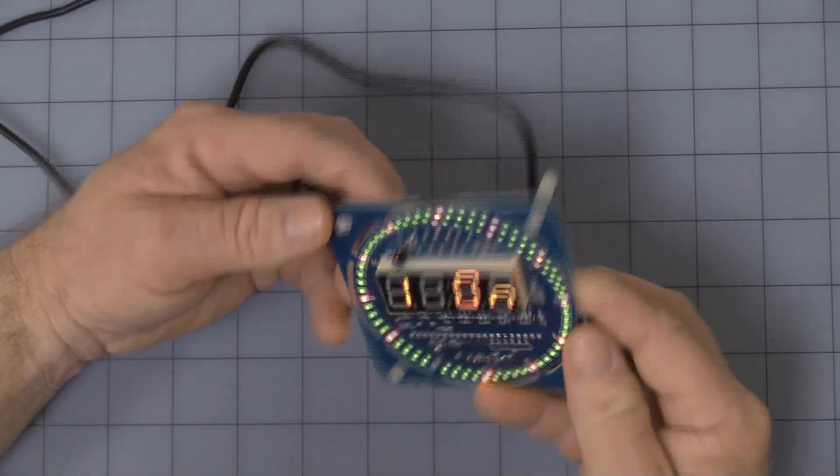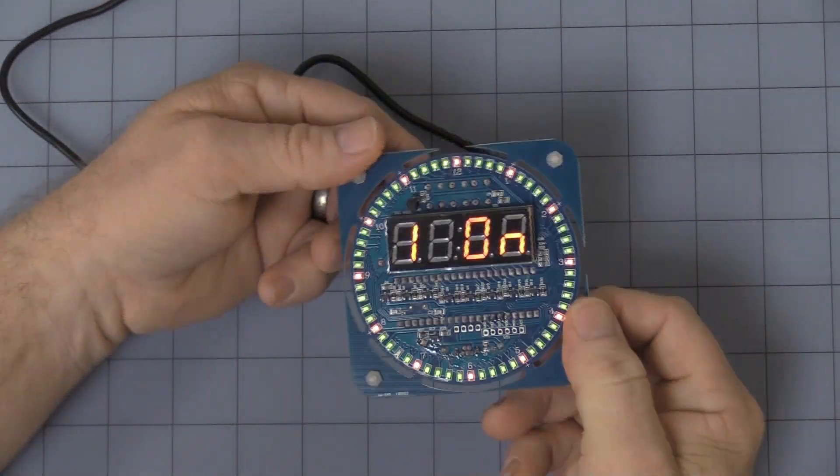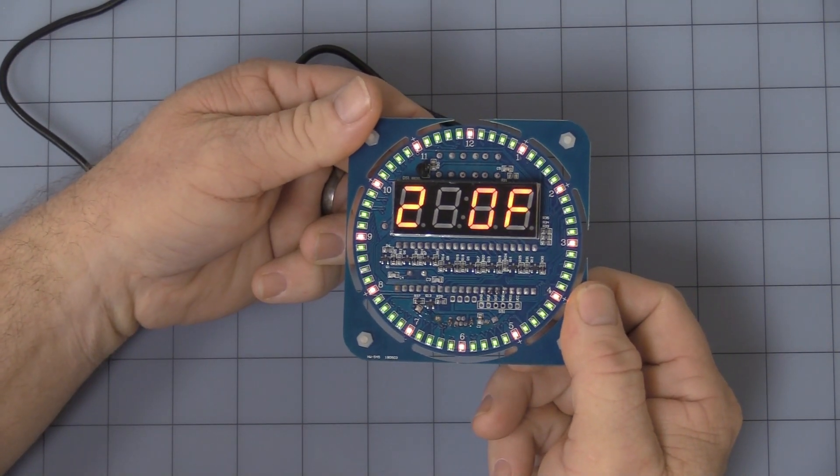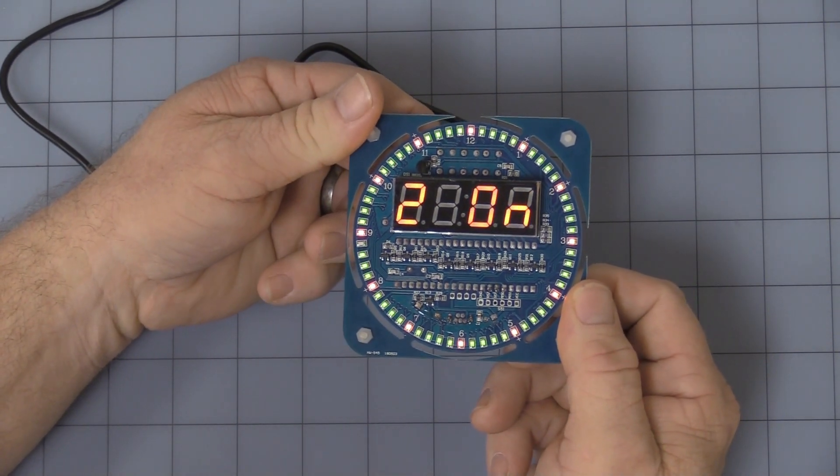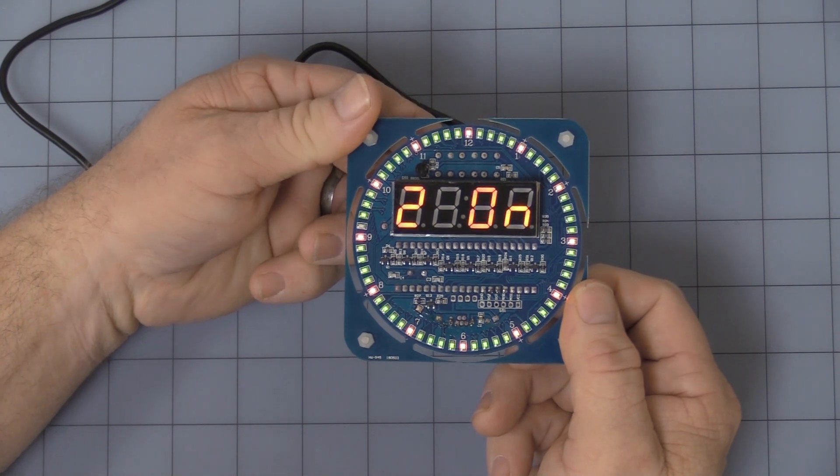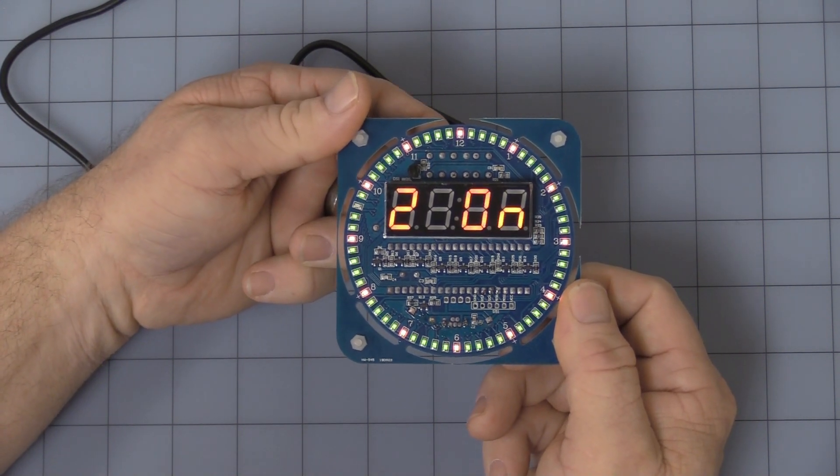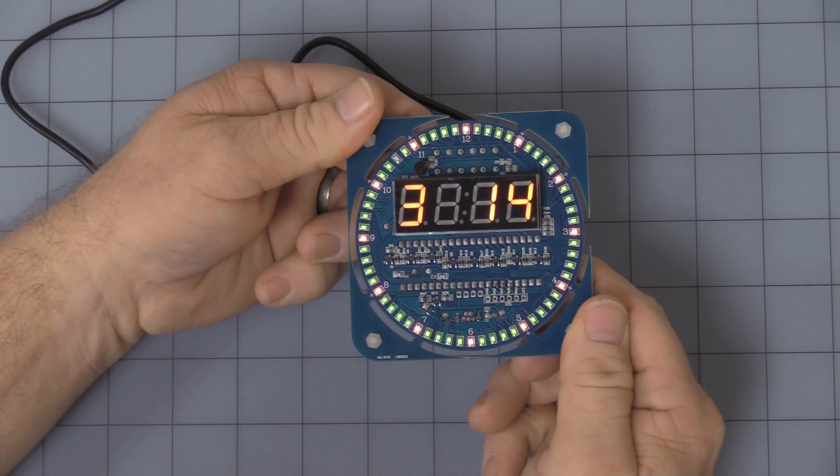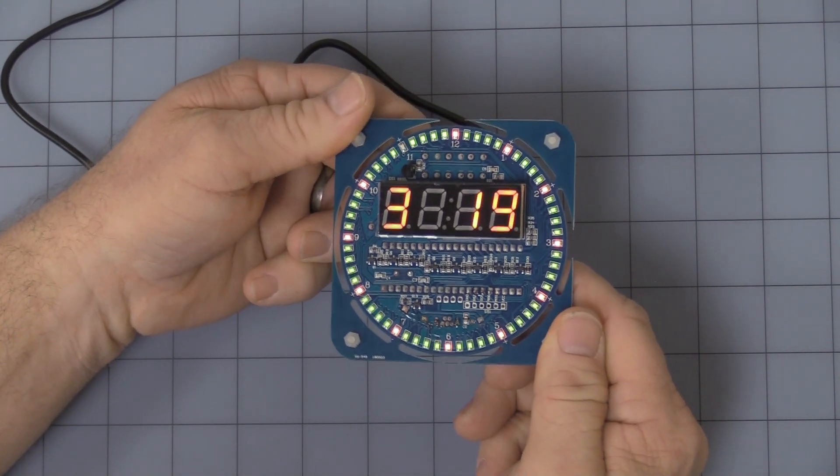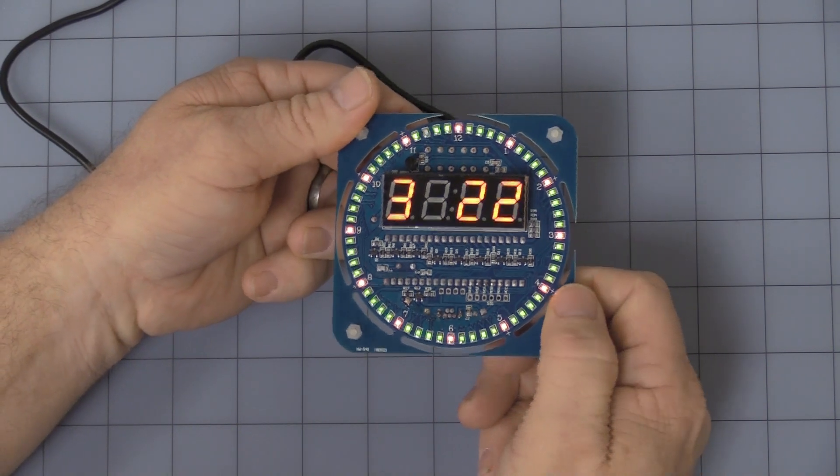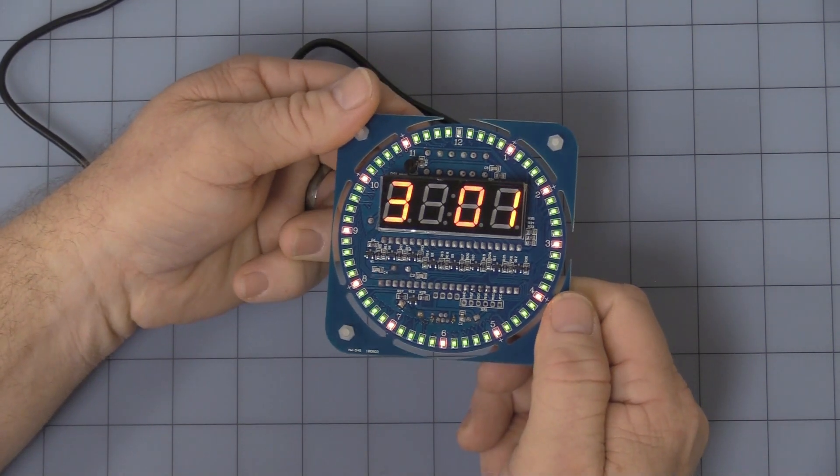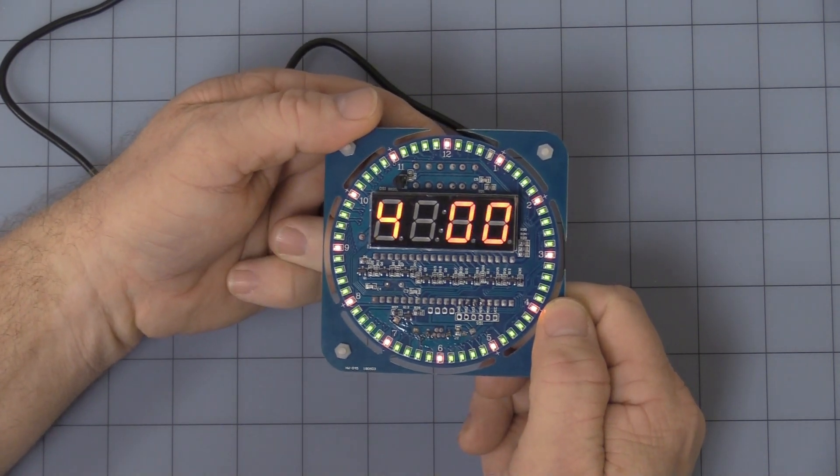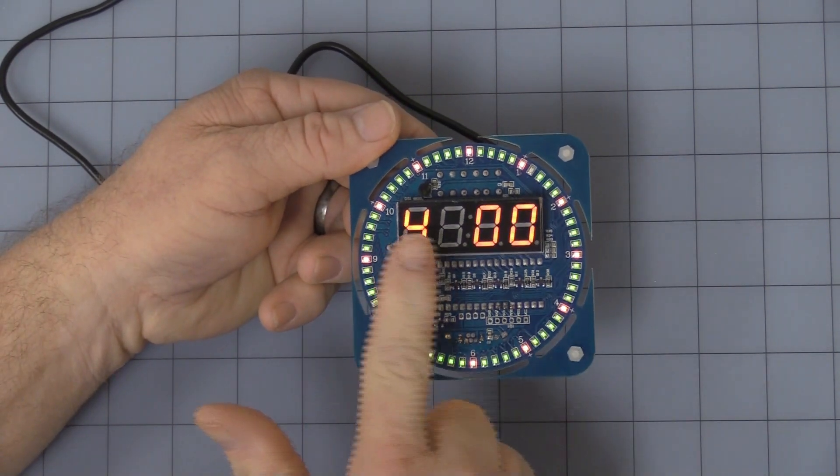Press and hold the mode button again. Now number two is the alarm mode. You can turn an alarm on or off. Once you turn it on, hit the mode button again and step number three is the hour. What hour do you want to set the alarm to? Again it's military time, 22, 23, 24, and then back to zero. Hit the mode button again and this is number four, the minutes.